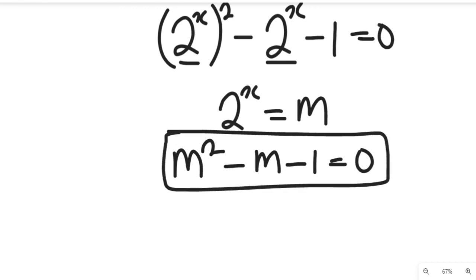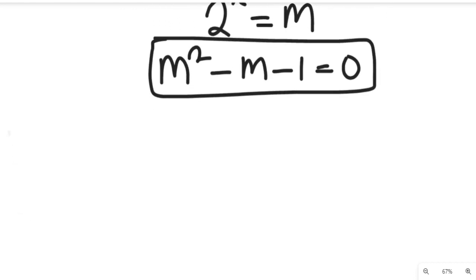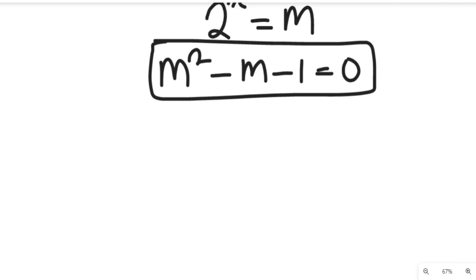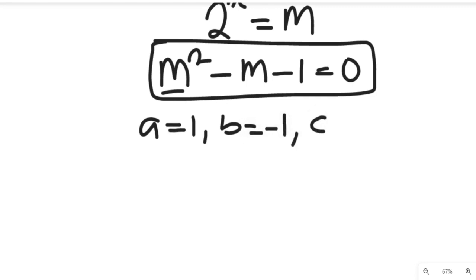We're going to solve this quadratic equation using the quadratic formula. From the quadratic formula, we can see that a is equal to 1, b is equal to negative 1, and c is equal to negative 1.